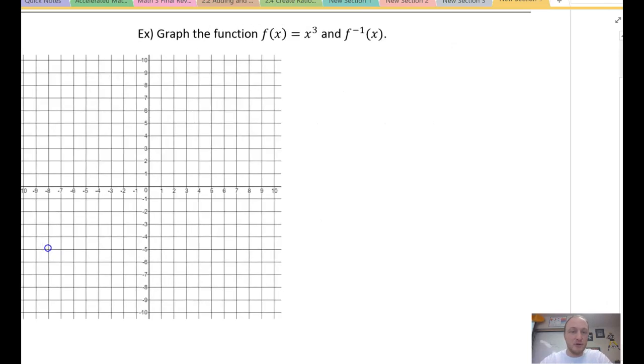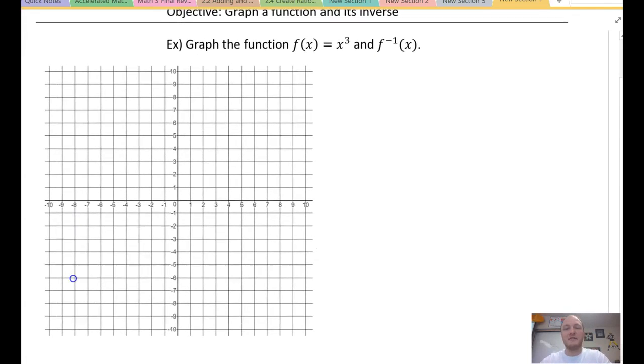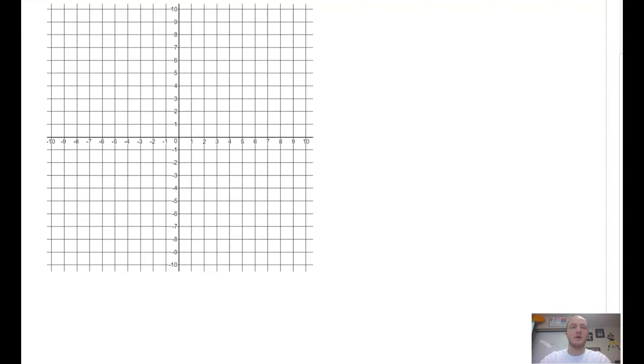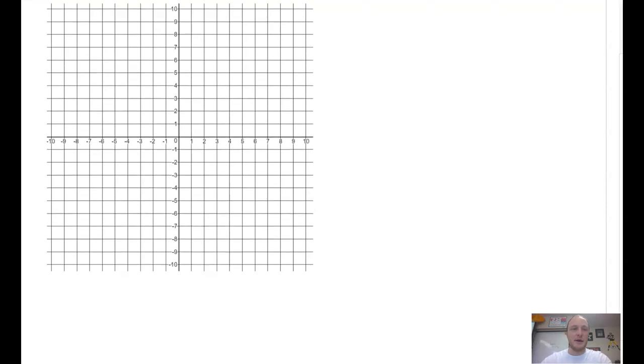Let's go ahead and look at our first example. Here, it says, graph the function f(x) = x³ and f inverse of x. So, again, the very first thing that we want to do is we want to graph our line y = x. And remember that's a dashed line that's going to go through the middle like this. So there's y equals x.